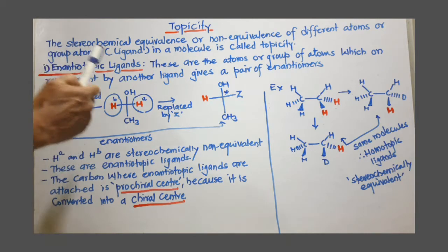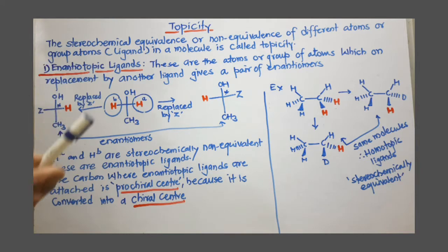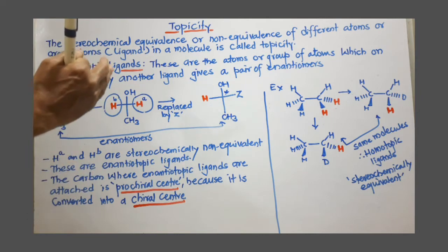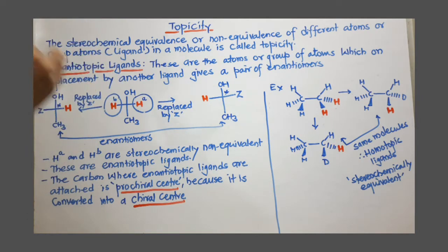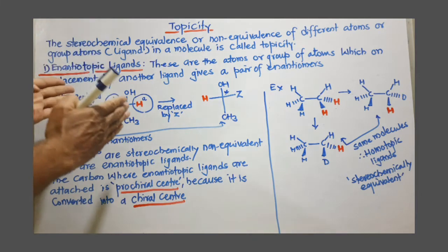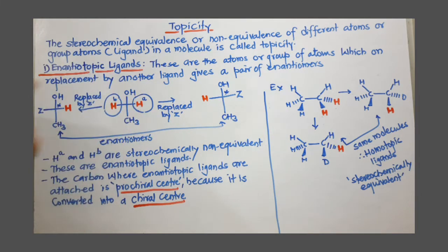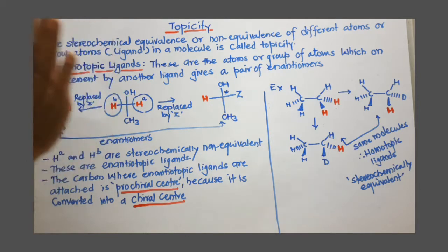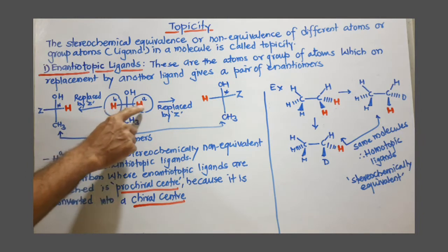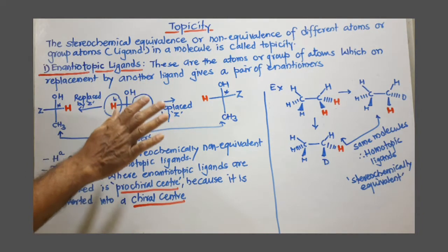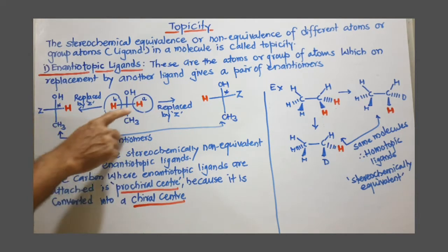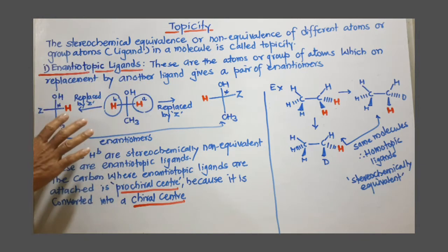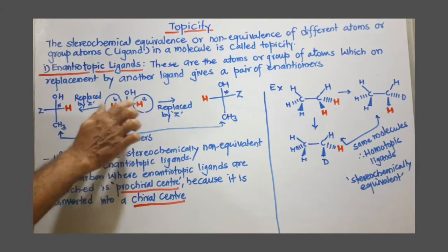We know chemically equivalent groups or chemically equivalent protons present in the molecule. If the protons have a similar environment then we can say that protons are chemically equivalent. Now focus on this middle compound — this is ethanol — and particularly on these red colored protons. These two protons are having similar chemical environment, so these two protons are chemically equivalent.